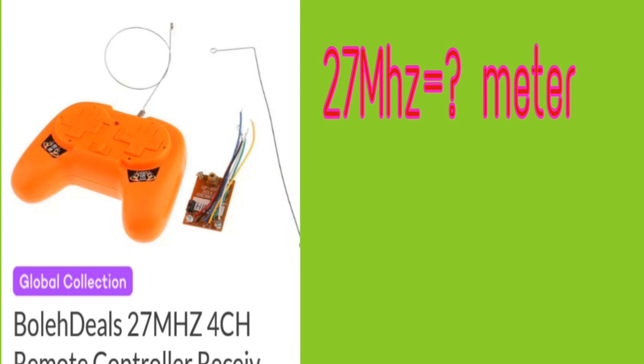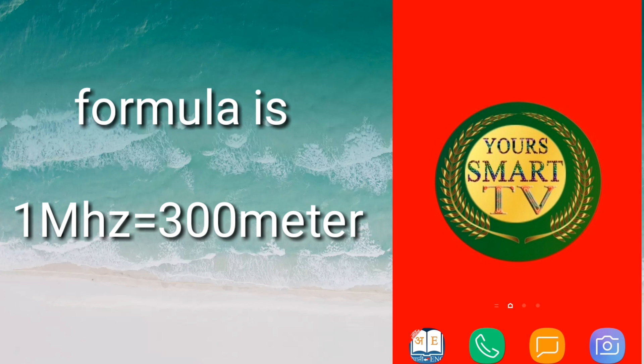First of all, I'm going to tell you the formula. The formula is 1 megahertz is equal to 300 meters.